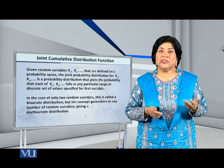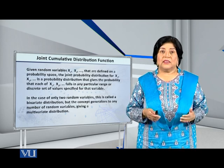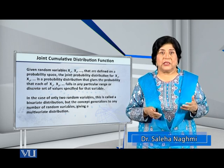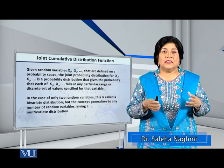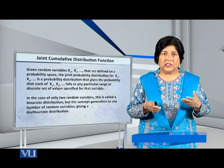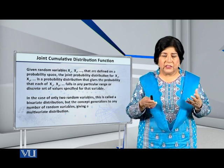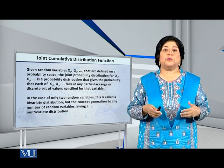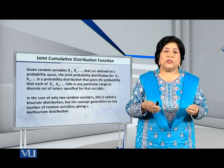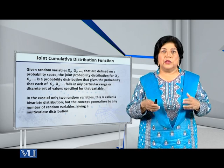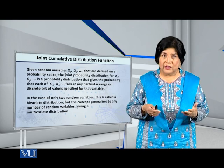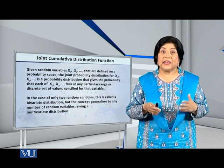Given the random variables X1, X2, and so on, that are defined on a probability space, the joint probability distribution for these variables is a probability distribution that gives us the probability of each of these variables falling in any particular range, whether the variables be discrete or continuous.